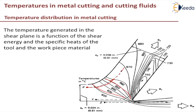The heat is carried away within the chip as the X particle moves along with it. Next we consider point Y. The material at Y passes through both deformation zones — through the primary deformation zone and also through the secondary deformation zone. It is getting heated until it leaves the secondary deformation zone, and the maximum temperature here is around 750°C.